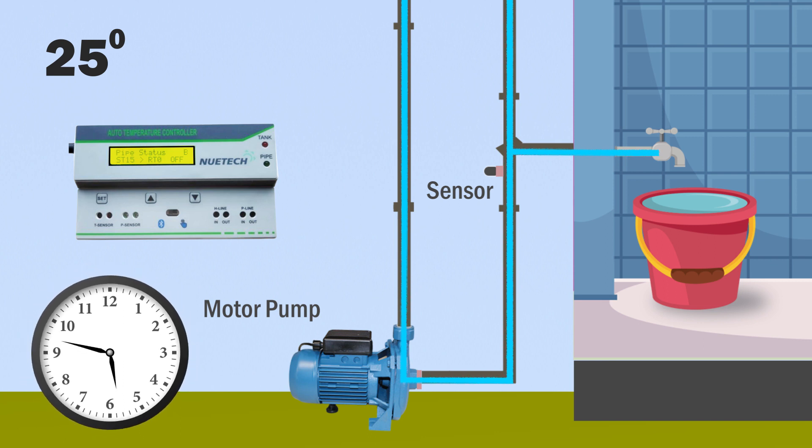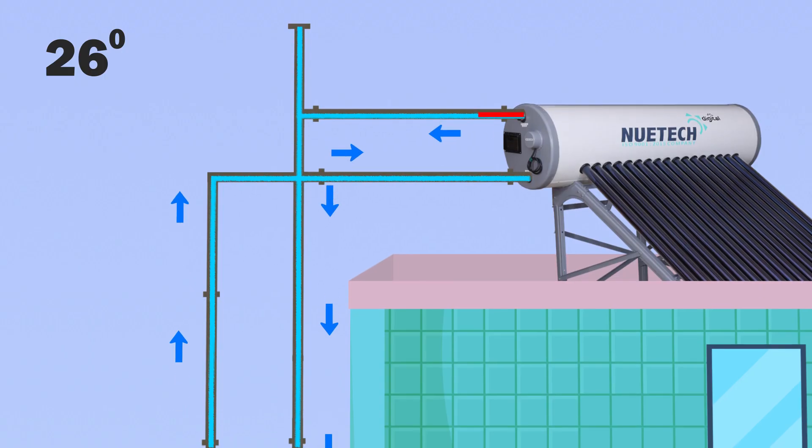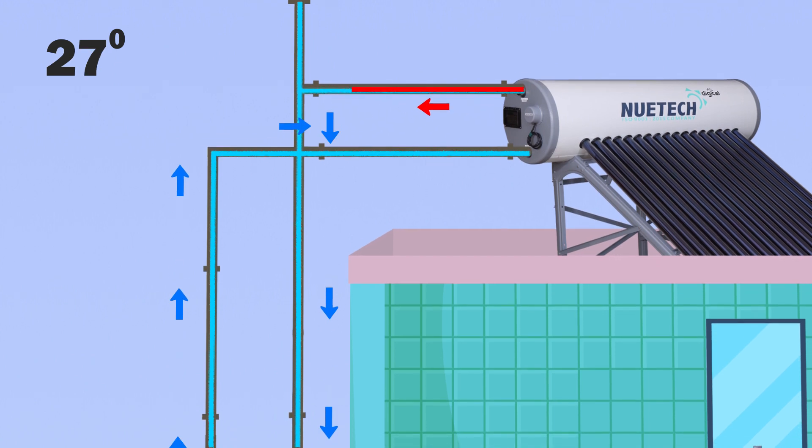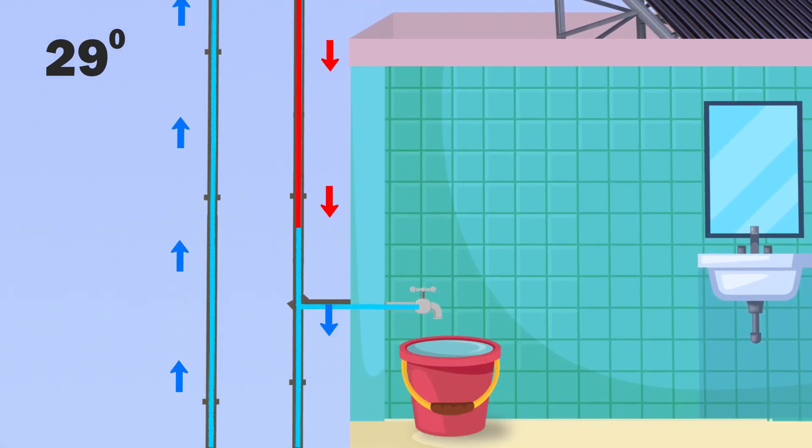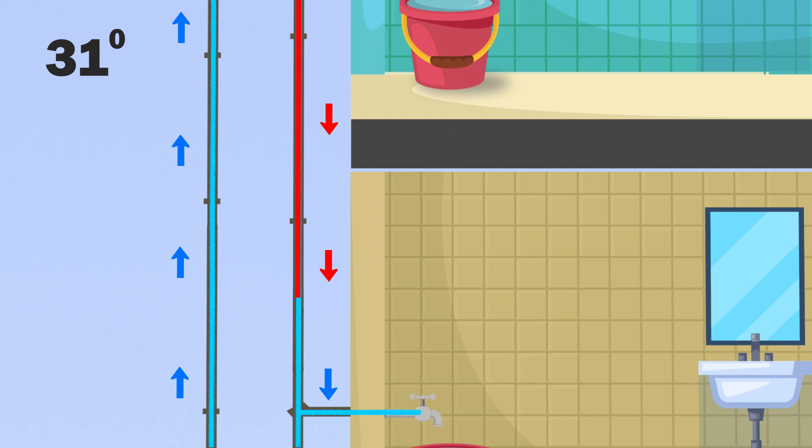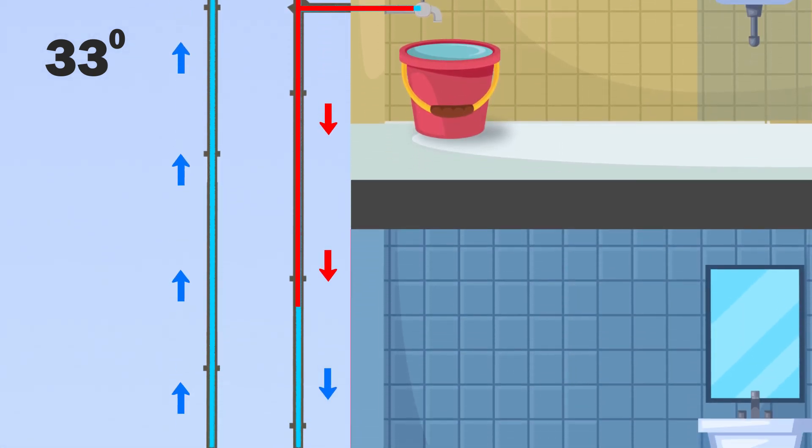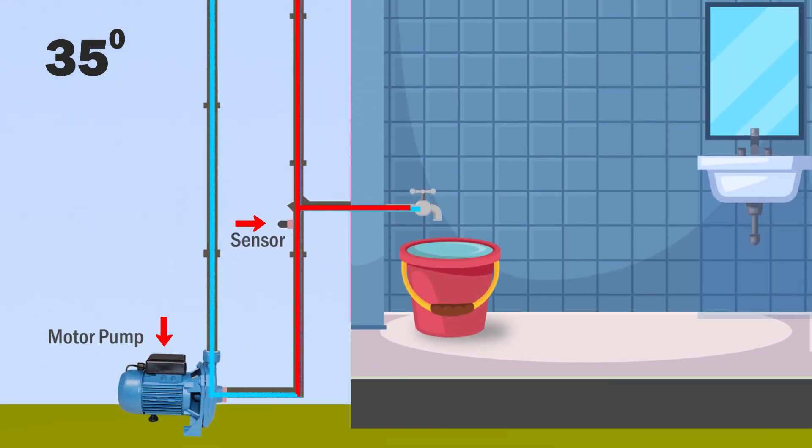For example, if the time is set for 6-9 AM and the pipeline temperature is set at 35 degrees, the return line pump will turn on so that the cold water filled in the pipeline does not reach the solar tank. When the hot water in the pipe reaches 35 degrees, the pump will be turned off immediately through the sensor.